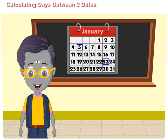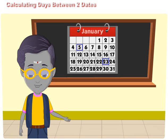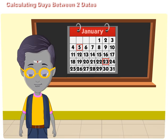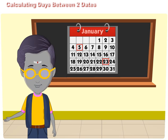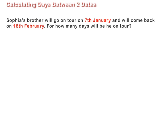Calculating days between two dates. Let us take an example. Sophia's brother will go on tour on 7th January and will come back on 18th February. For how many days will he be on tour?